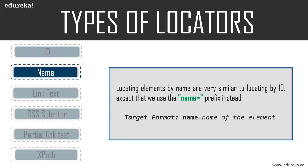Next is the Name locator. If there is no ID present in the HTML code, we use the name locator. It checks if the desired element has a name attribute, but the name cannot be unique all the time. If there are multiple names, Selenium always performs actions on the first matching element. Locating an element by name is very similar to locating by ID, except we use the name as a prefix instead.